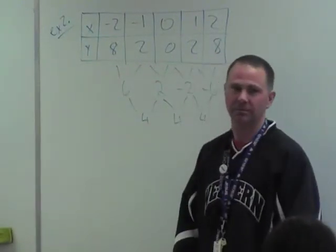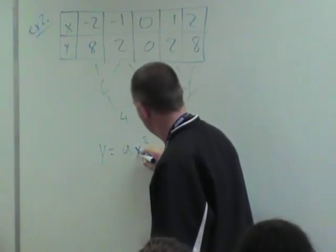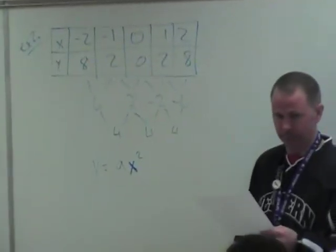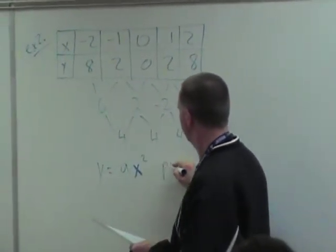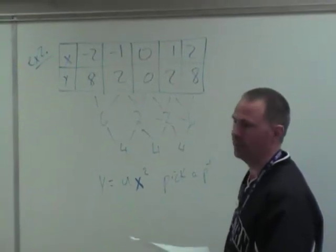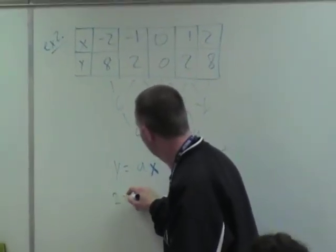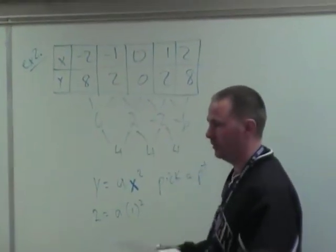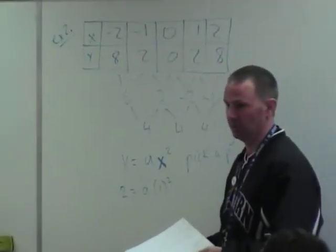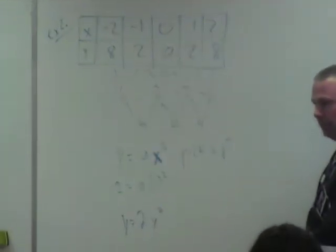Now, write the equation. Y equals ax squared. How do you think I'm going to find a? Well, don't I know x and y? So, what do we got to do? Plug in a point. Pick a point. Zero, zero would not be a good one to pick. Take a point that's off of that. One, two. So, two is y and one is x. Now, solve for a. Two equals a times one squared. A equals two. So, y equals two x squared. Ta-da!